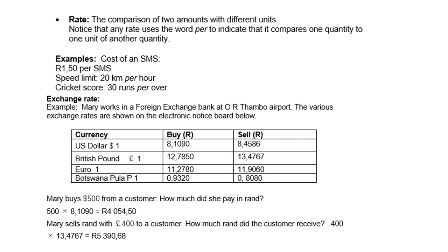Examples: the cost of an SMS — 150 per SMS. Speed limit — 20 kilometers per hour. Cricket score — 30 runs per hour.